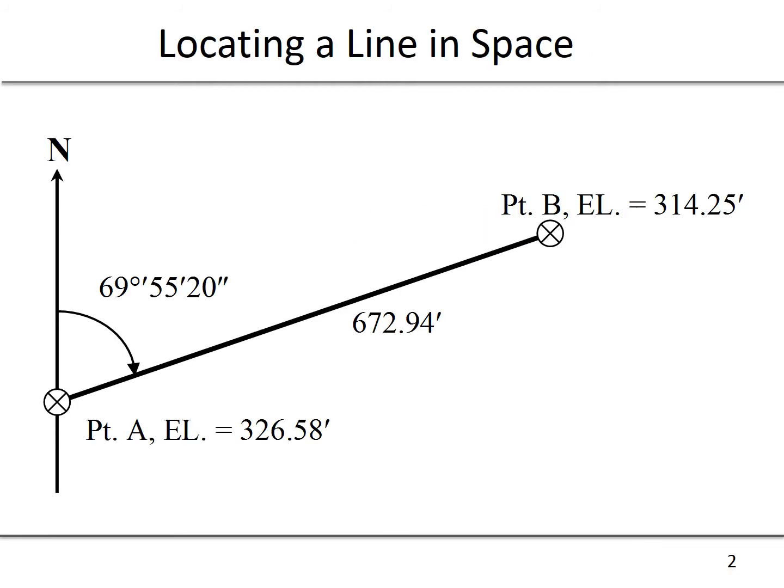The fundamental information you need to locate a line in space is essentially to locate an unknown point based on a known point. So in this case point A is our known point and we're moving to point B. To locate the line between those points or point B itself you need three components.